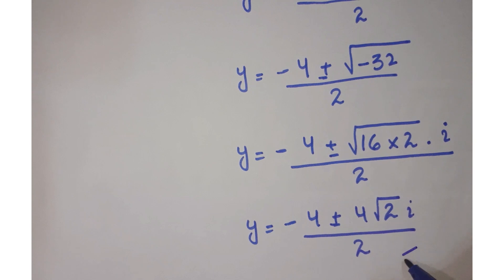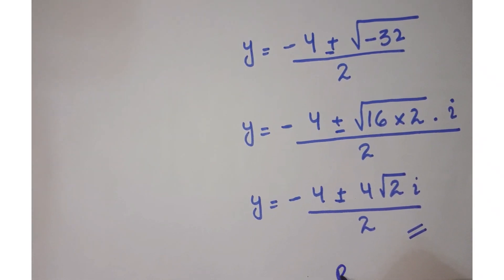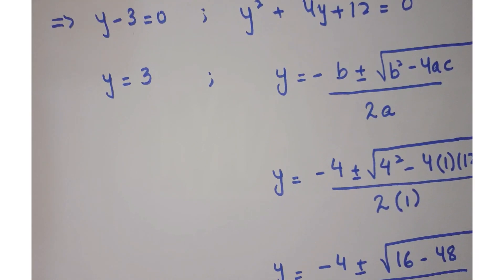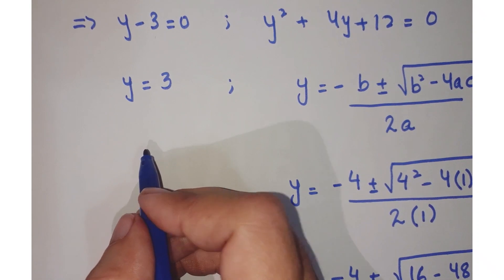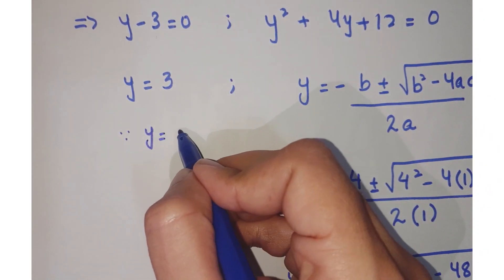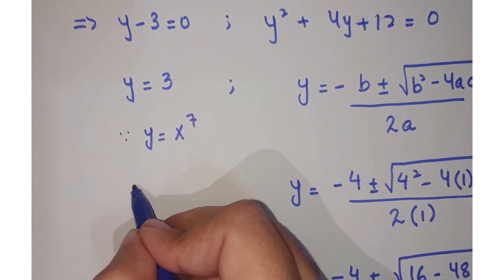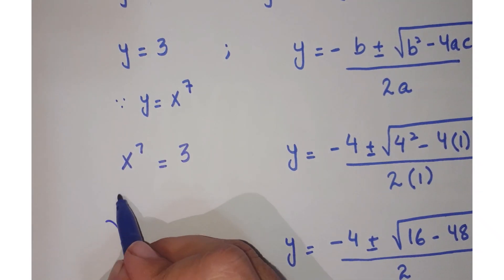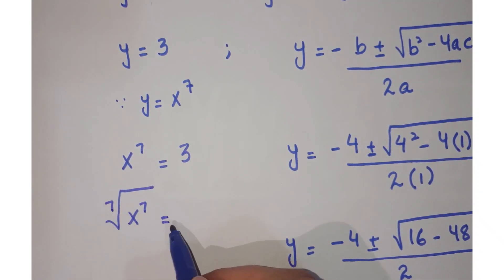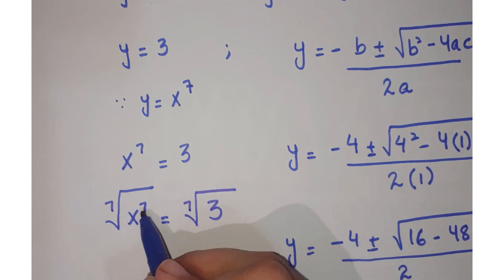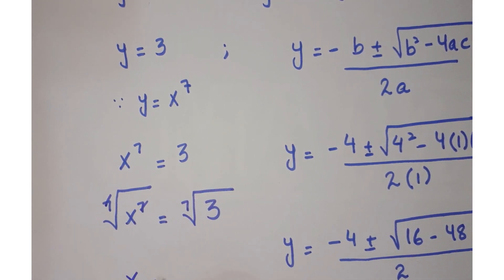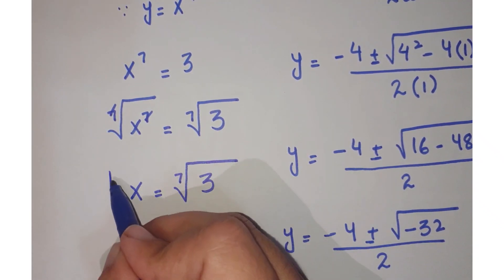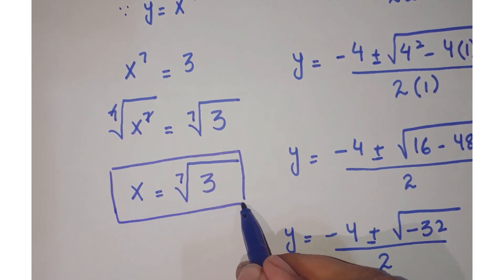Since this is an imaginary solution, it is rejected. We work with y equals 3. Since y equals x to the power 7, we have x to the power 7 equals 3. Taking the 7th root on both sides, the powers cancel and x equals the 7th root of 3. This is our required answer.